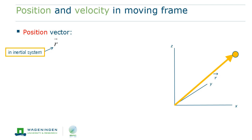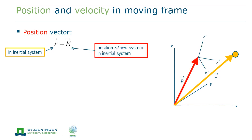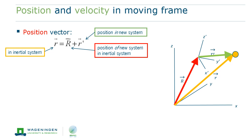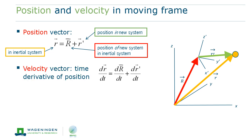Let us start with making the connection between the description of a particle in an inertial reference frame and an arbitrary reference frame. The position of the orange dot is denoted by the position vector r in the inertial frame. Then, we define a new reference frame denoted by x prime, y prime, and z prime. The position of this new reference frame is given by the position vector capital R. Then, the position of the orange dot in the new coordinate system is given by vector r prime. Next, we want to describe the velocity of the dot, which implies that we take the time derivative of the position vector r. On the right-hand side, this gives the sum of the velocity vector of the new reference frame and the velocity vector of the point relative to the origin of the new reference frame.